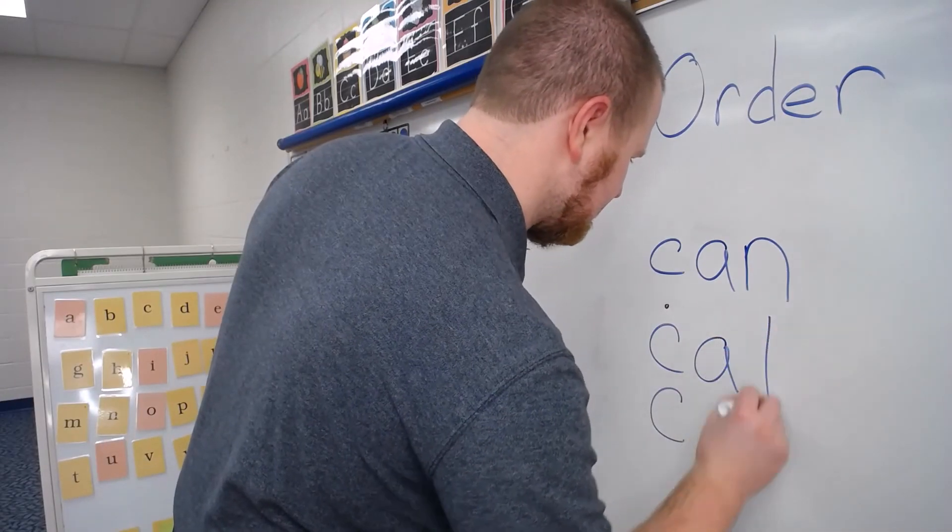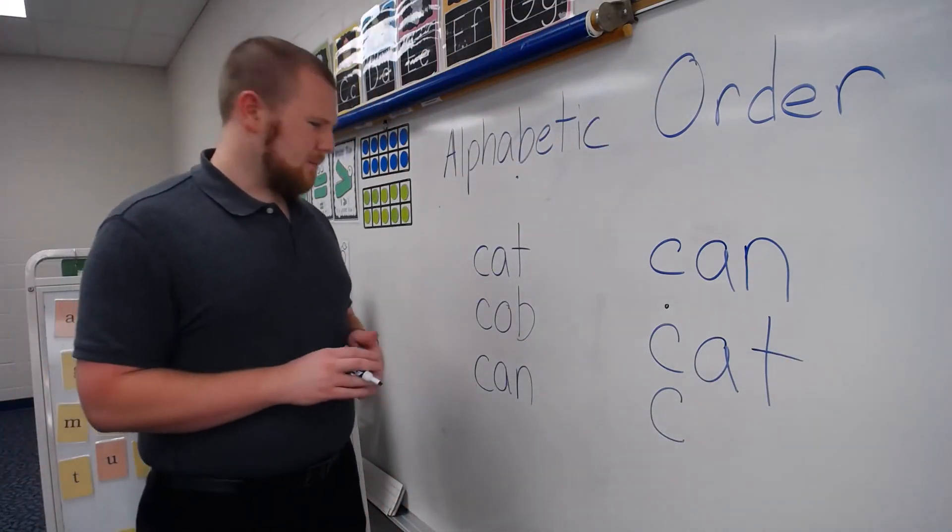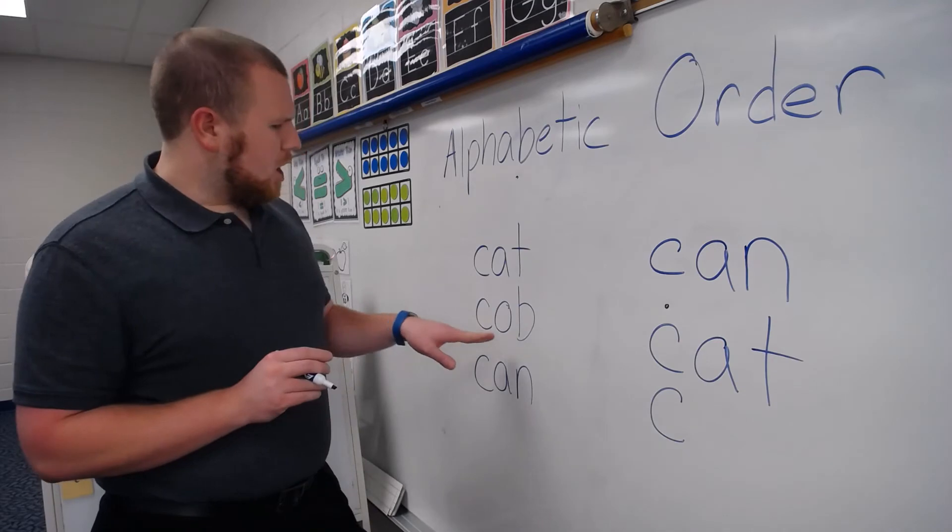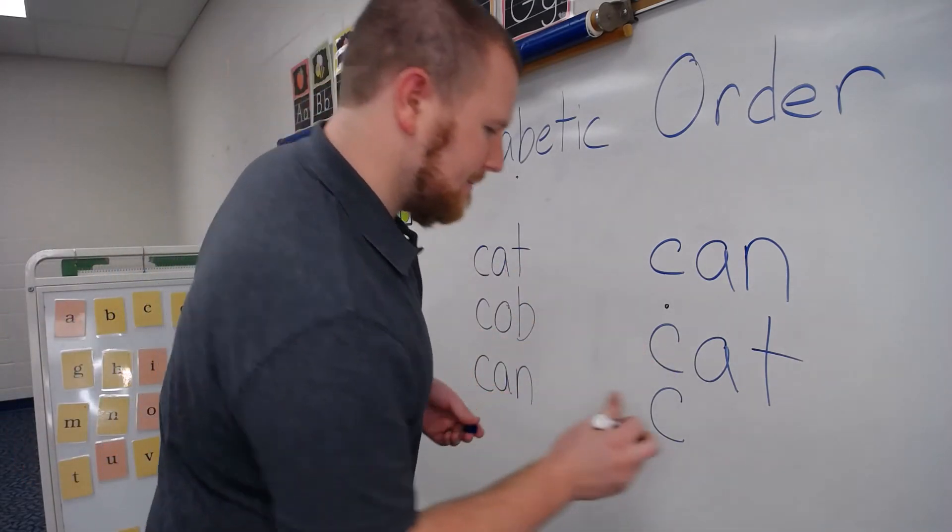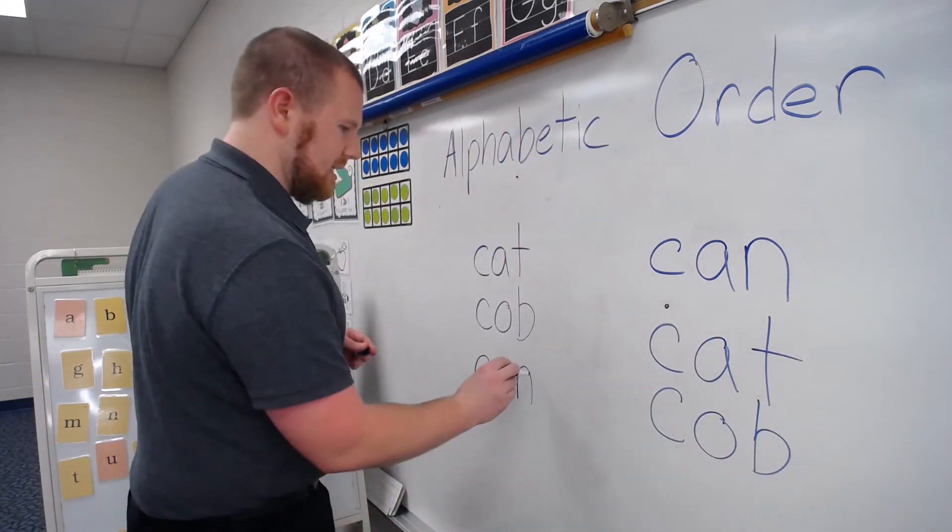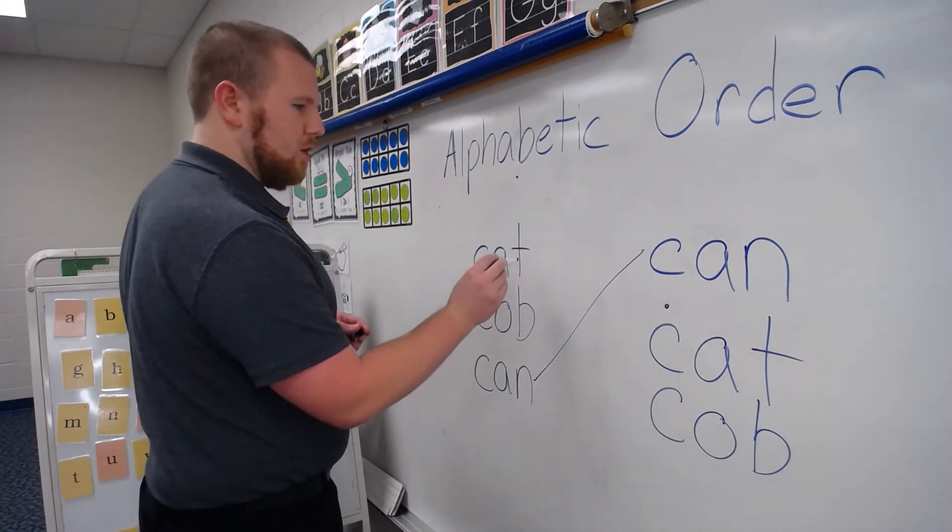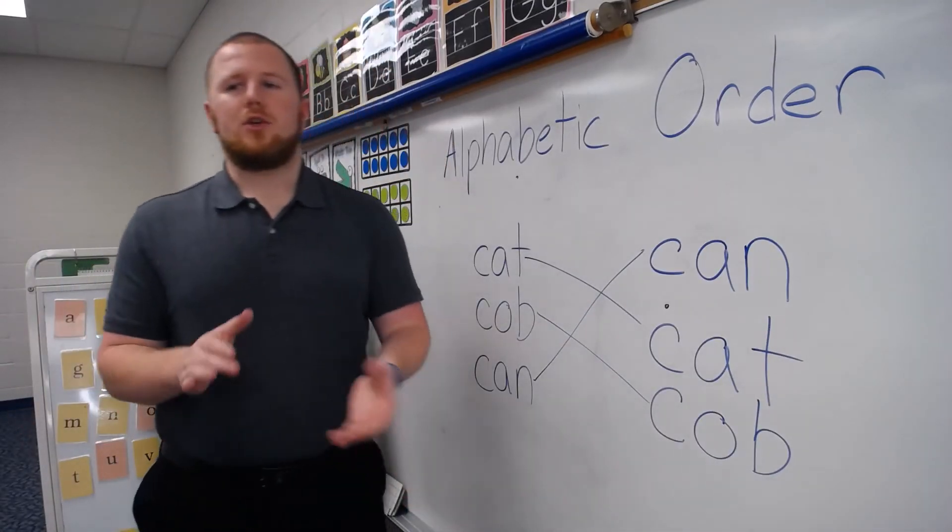O, P, Q, R, S, T. Okay. So that one then would be next. C, A, N, C, A, T. So, but what about this word? Did we forget it? Well, let's see. C, O. O comes after A. So that means that word comes here. You see how we did that? Can goes first. Cat goes second. Cob goes third. So that's what we would do.